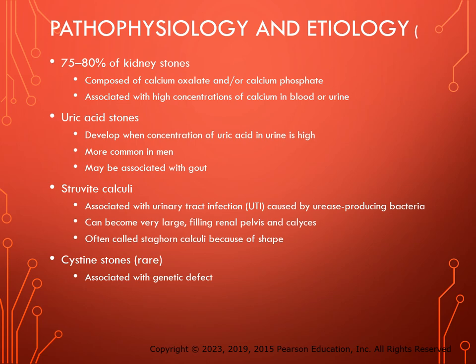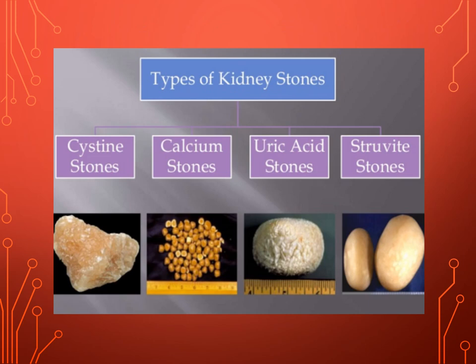Table 5.6 lists stone types, contributing factors, and dietary modifications. For calcium phosphate — the most common — management includes thiazide diuretics, potassium citrate, limiting foods high in sodium and animal protein, maintaining calcium intake, increasing foods that acidify urine, and increasing hydration and exercise. For struvite, because of UTI, use antibiotics. For uric acid, use allopurinol. For cysteine, use sodium restriction, potassium citrate, and penicillamine.